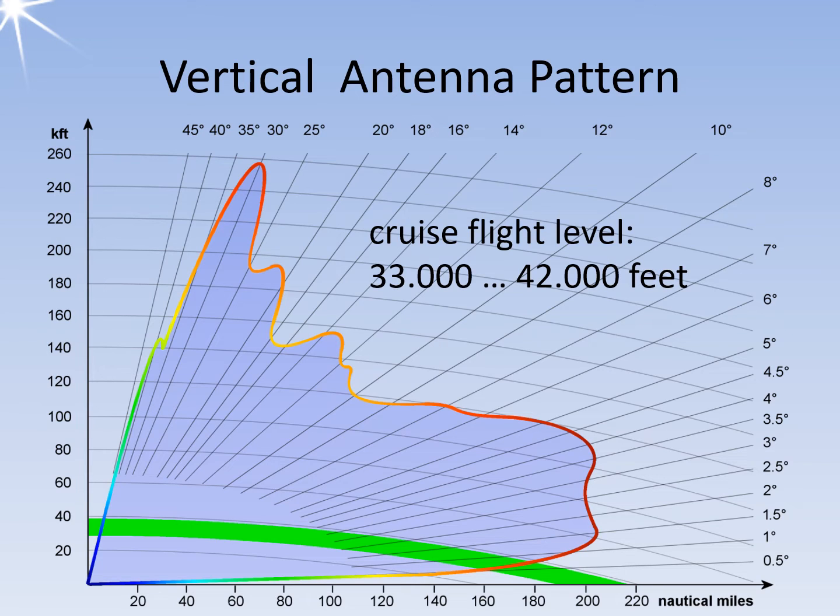The normal cruising altitude for commercial airplanes is between 33,000 and 42,000 feet, which is equivalent to 10,000 to 12,800 meters. However, to accommodate military aircraft, air traffic control radars must also be capable of displaying a wider range of altitudes.